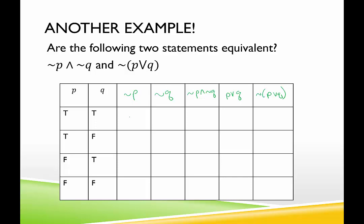For not P, that would be false, false, true, true. Not Q would be false, true, false, true. Not P and not Q — this is a conjunction, so I need them both to be true. False and false is false. False and true is false. True and false is false. True and true is true.